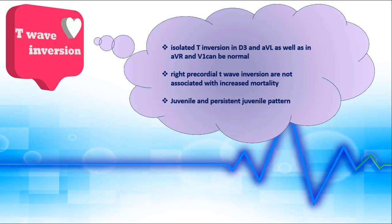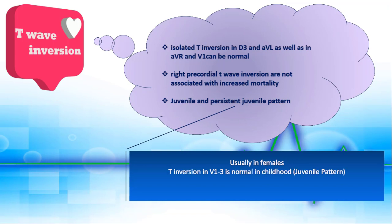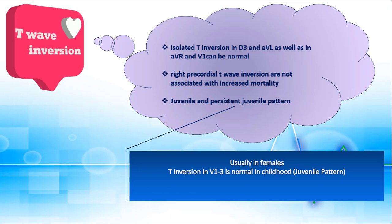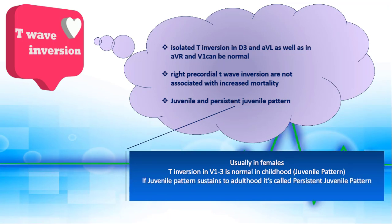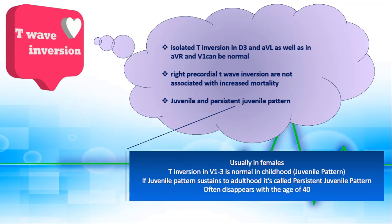The third normal variation is persistent juvenile pattern — another cause of right precordial T inversion in adults, usually observed in females due to the dominance of right ventricular forces. Shallow T inversion in V1 to V3 is a normal finding in childhood, called the juvenile T wave pattern. If this persists into adulthood, we call it persistent juvenile T wave pattern, defined as T inversion in two contiguous right precordial leads, and it often disappears by age 40.